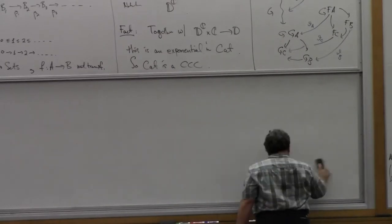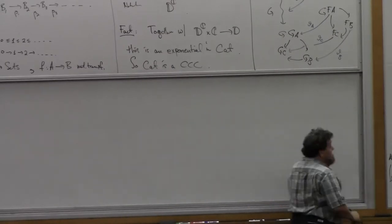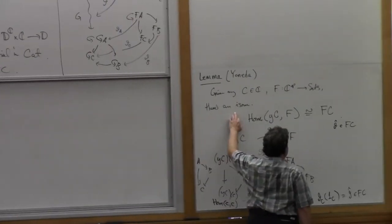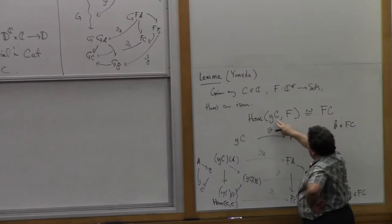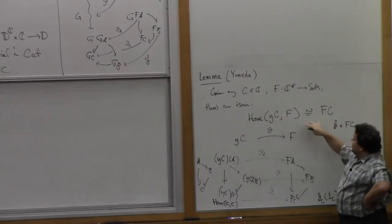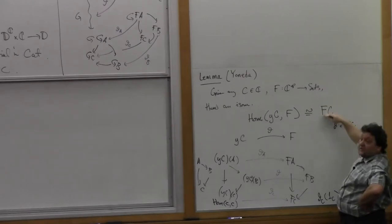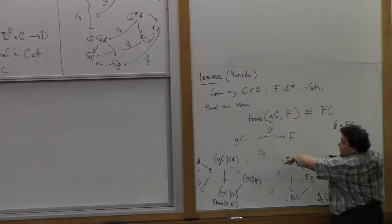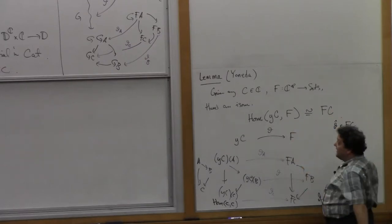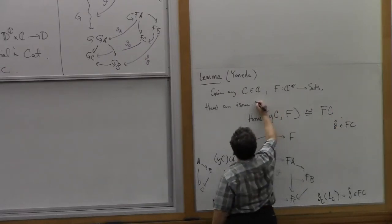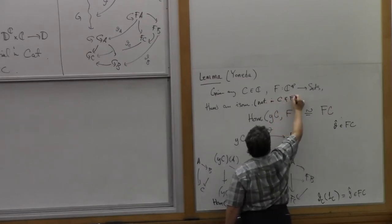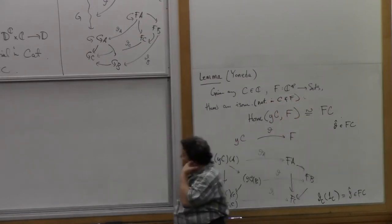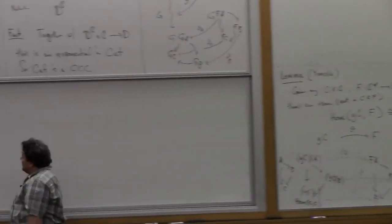There's one more bit of the Yoneda Lemma I can't help but include: this isomorphism is also natural in both arguments C and F. That is, if I change C to some C prime or F to some G, then I'll get a corresponding commutative square involving that change. So there's an isomorphism natural in C and F.